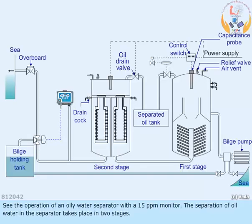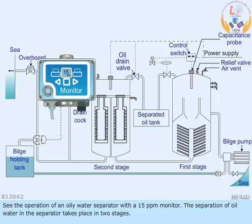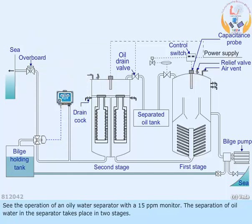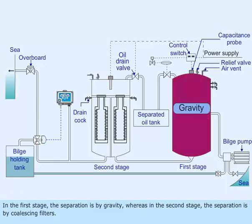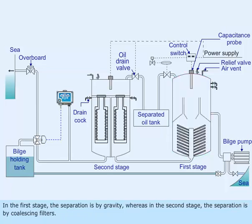See the operation of an oily water separator with a 15 ppm monitor. The separation of oil and water in the separator takes place in two stages. In the first stage, the separation is by gravity, whereas in the second stage, the separation is by coalescing filters.